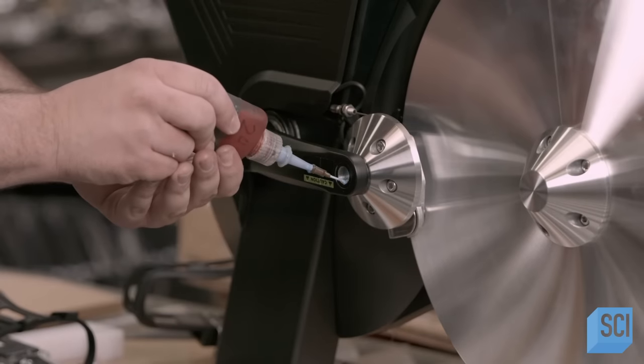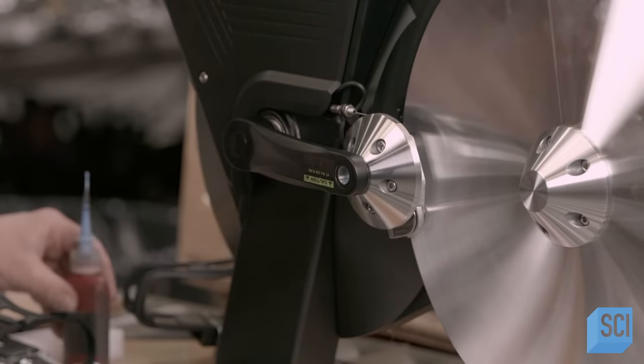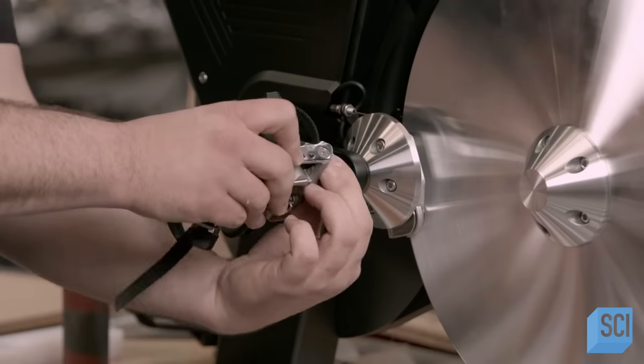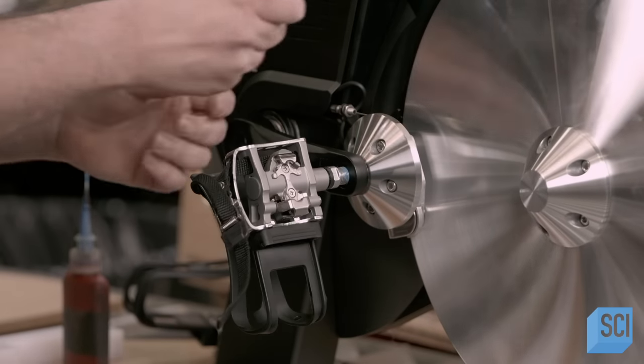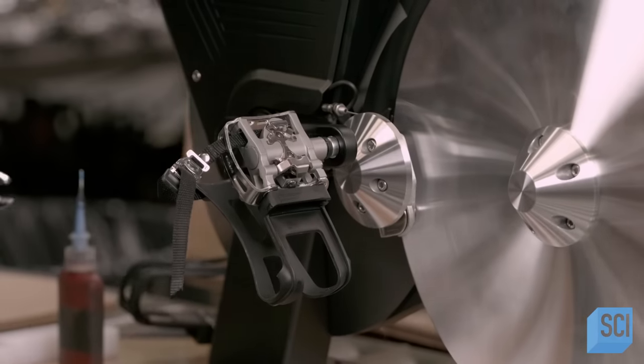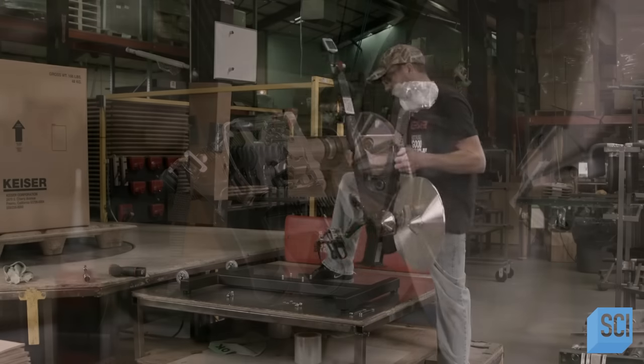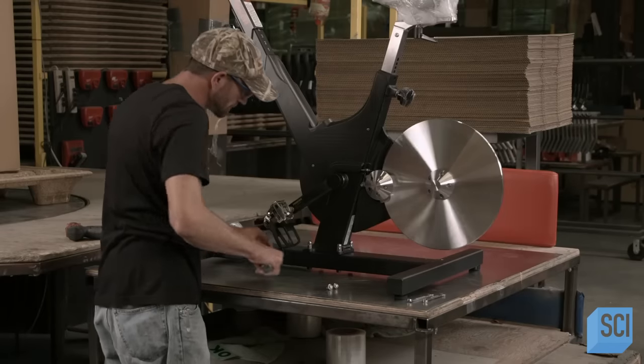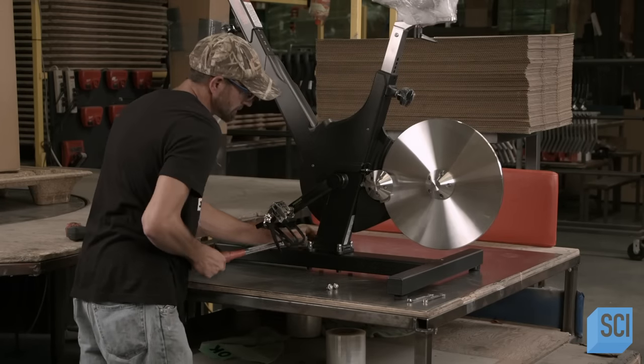Another member of the team then applies thread locking adhesive to the screw holes in the crank arms. He screws the pedals tightly to the crank arms and torques them to a specific setting. The worker aligns the four bolt holes on the frame to the bolts on the base and secures them with cap nuts.